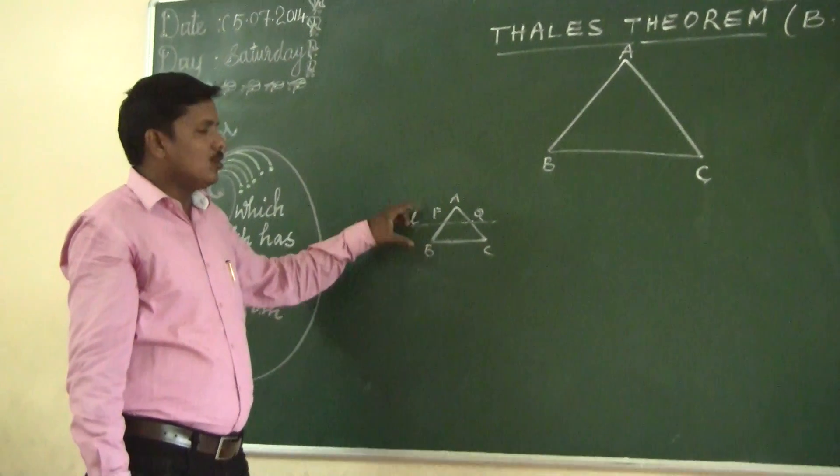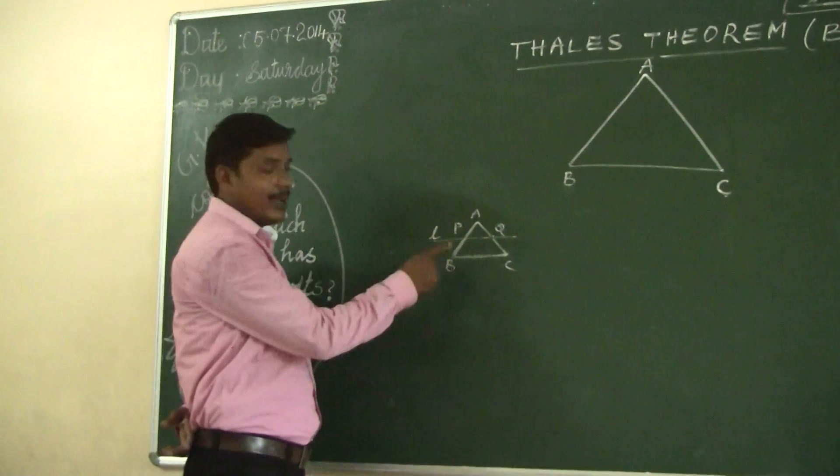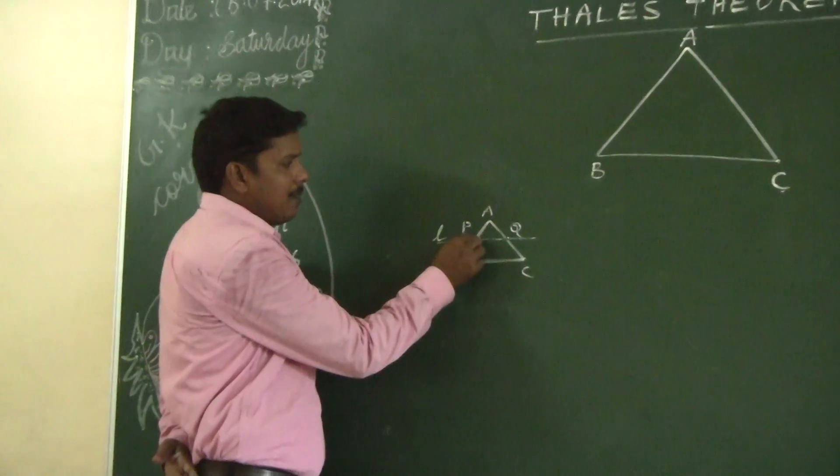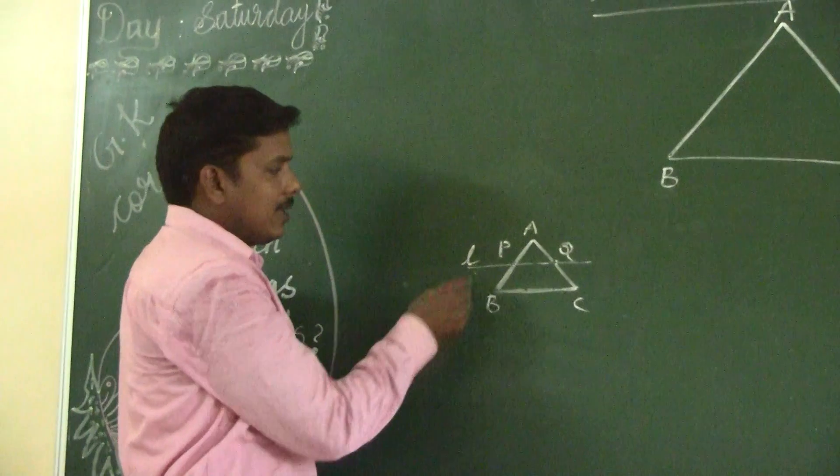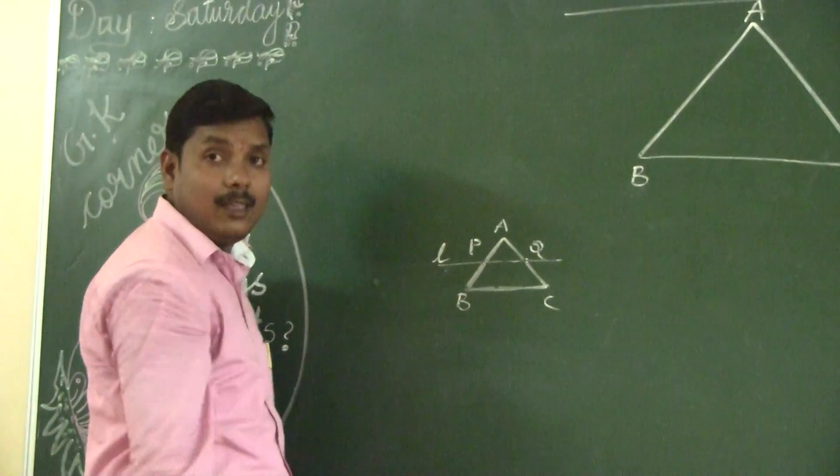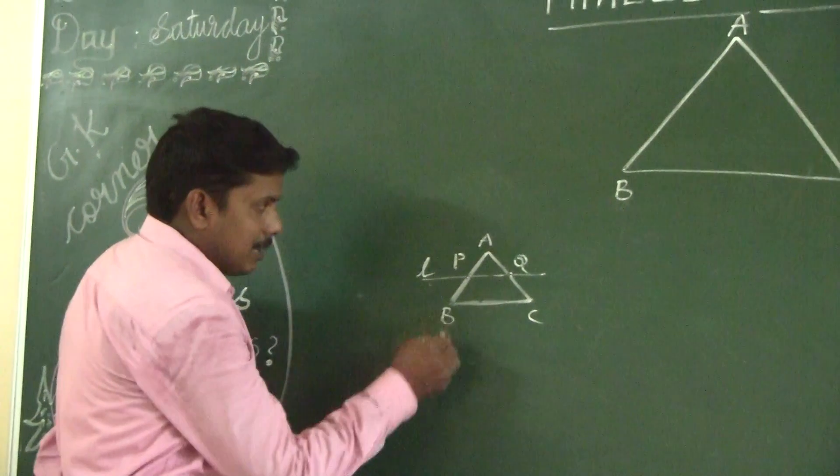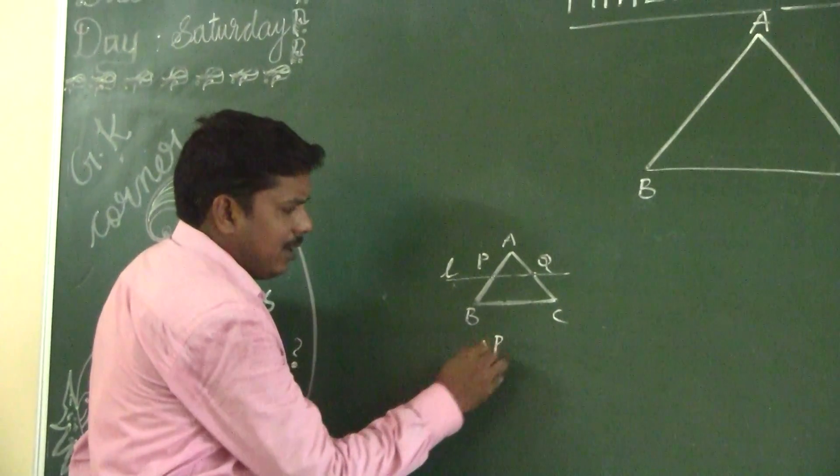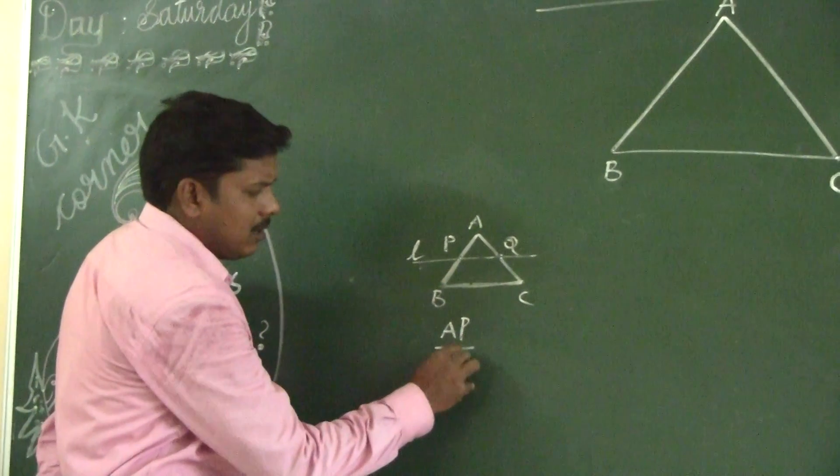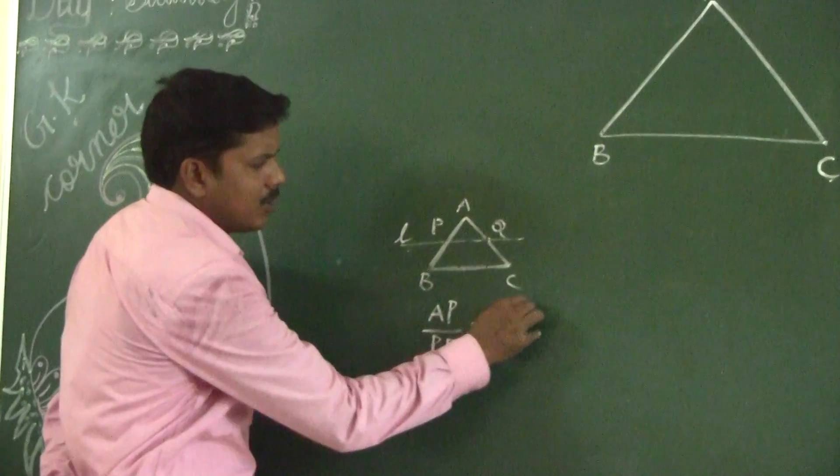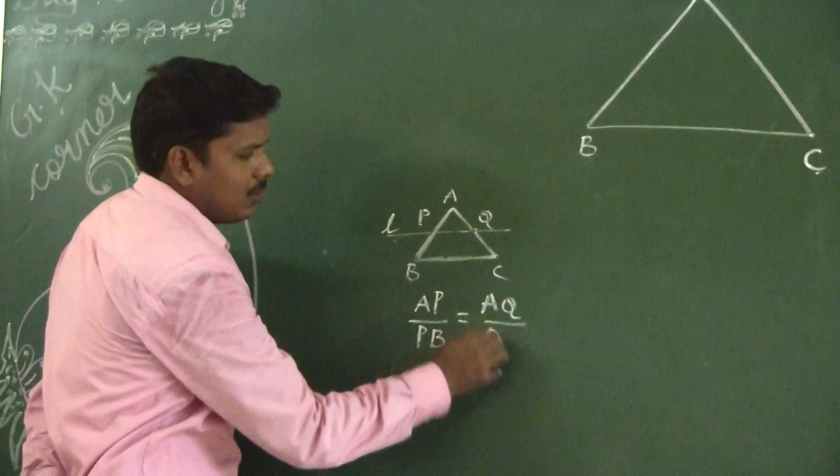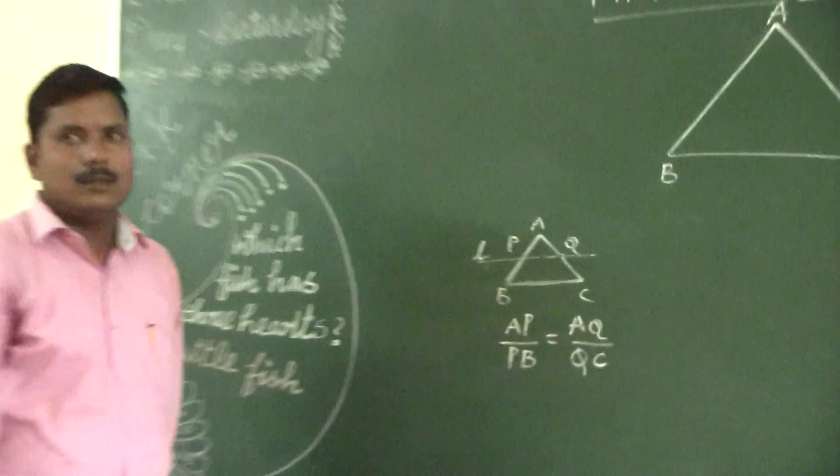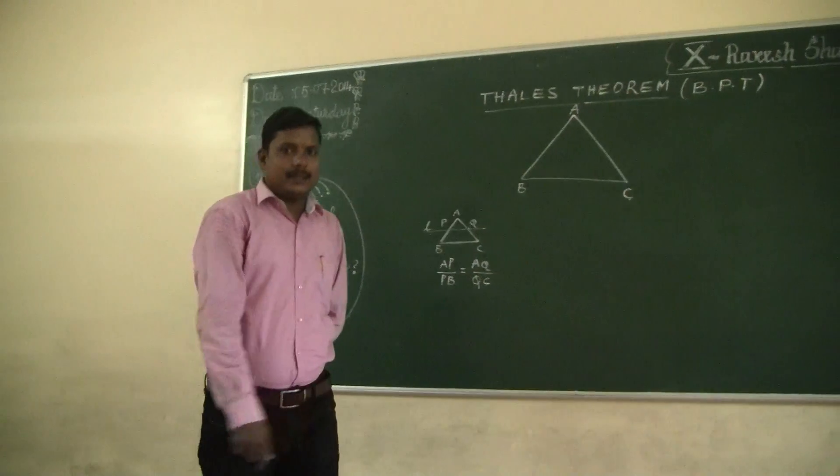What are the remaining two sides? AB and AC. So, this AB and AC are divided by the line L in the same ratio. That means, you want to prove AP by PB equal to AQ by QC. This is what we want to prove. Let's see how to prove.